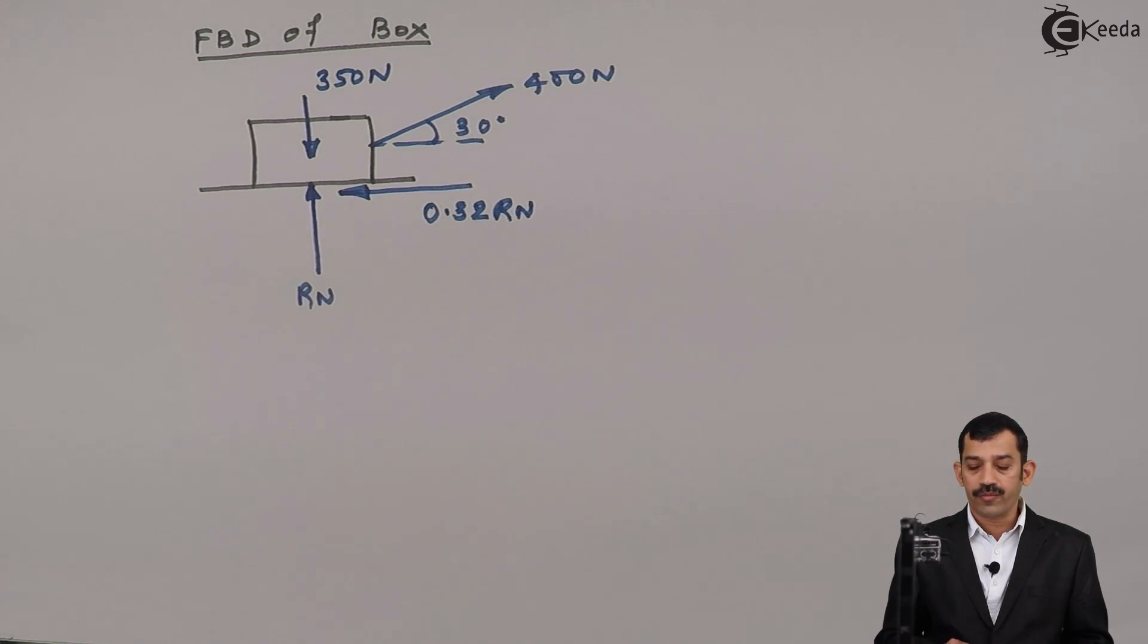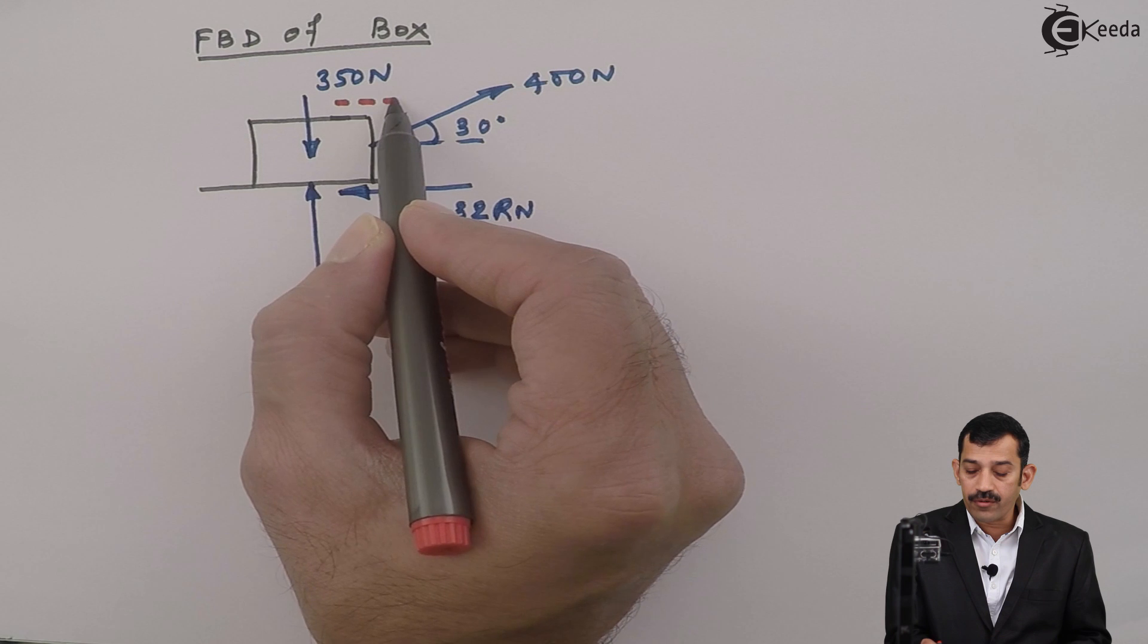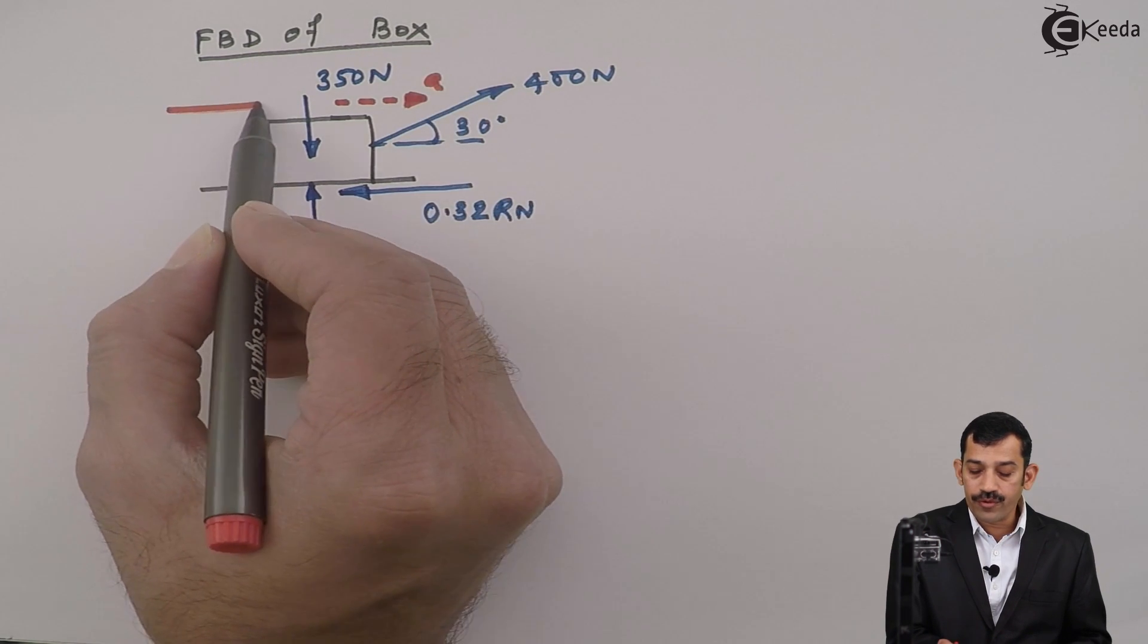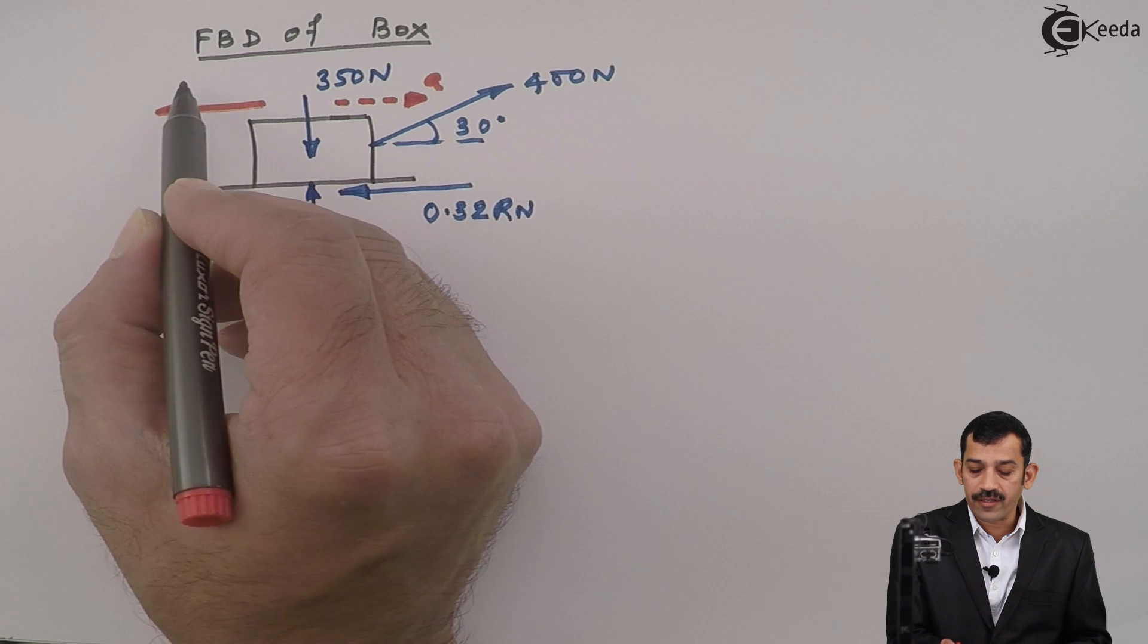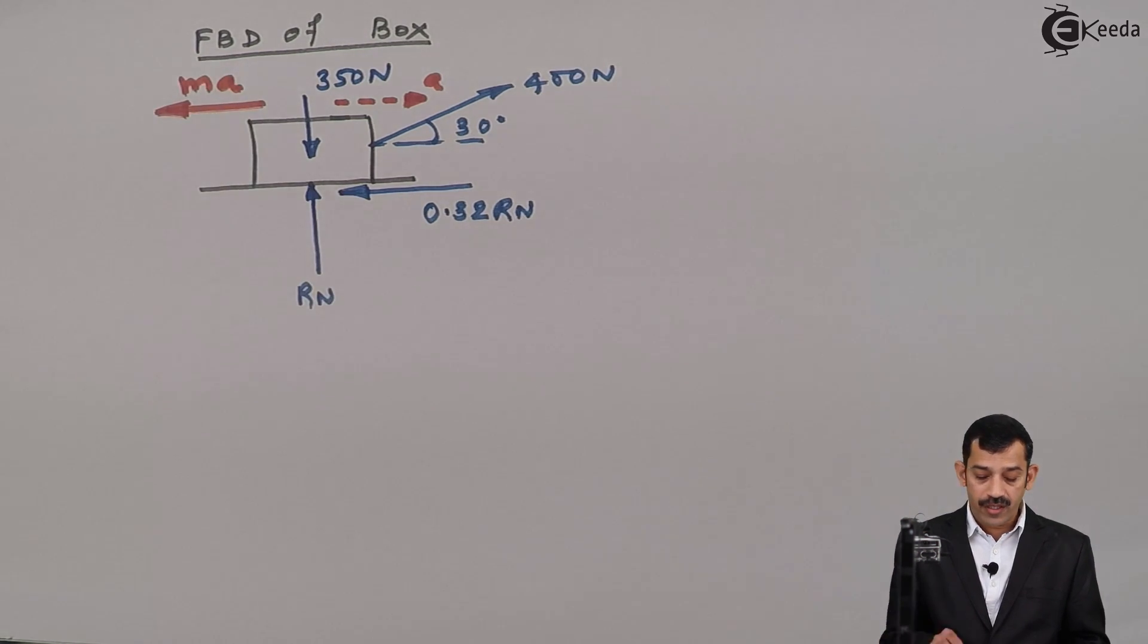Now important force what is remaining now? That is inertia force which acts in opposite direction of acceleration. Acceleration due to 400 Newton, you will get in rightward direction. Therefore, in opposite direction of acceleration, I will add here Ma force means what? Inertia force.